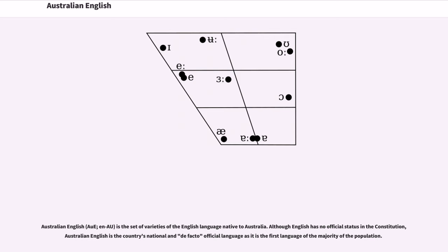Australian English is the set of varieties of the English language native to Australia. Although English has no official status in the Constitution, Australian English is the country's national and de facto official language as it is the first language of the majority of the population.